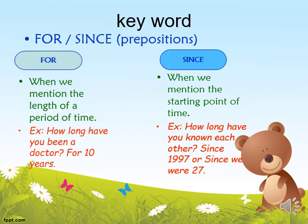The keywords used in the present perfect are: for, since. We use for when we mention the length of a period of time. For example: how long have you been a doctor? For 10 years. So we use for to talk about a length of time — for 10 years.